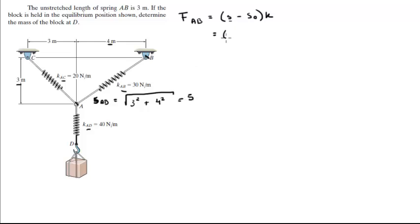So, S for AB is equal to 5 minus the unstretched length, which is 3. And the constant of AB is 30 N per meter. This gives you 60 N. That's the force of AB.